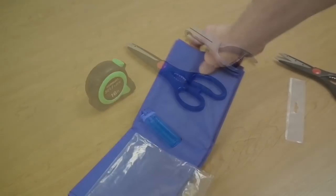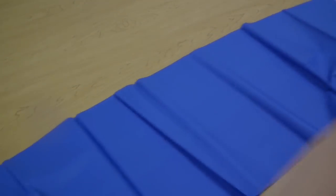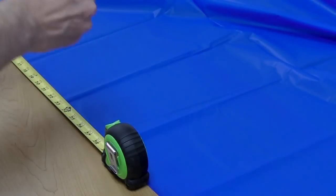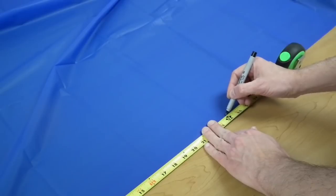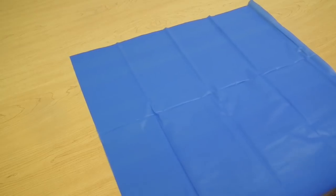Begin by spreading your plastic sheeting out on the table and marking a square the size that you wish your parachute to be. For this tutorial, we're going to make a 24-inch diameter parachute. So we start by marking a square on the sheeting, 24 inches on the side, and cutting it out.